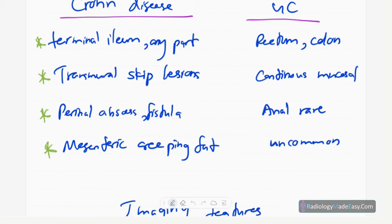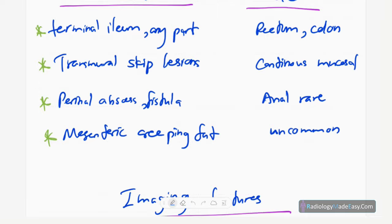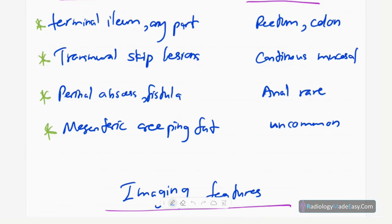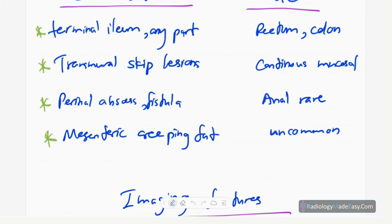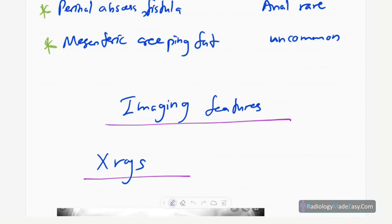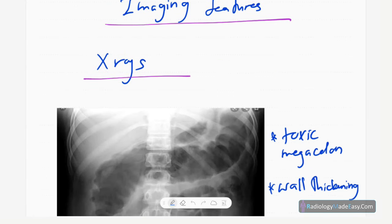Other complicating features in Crohn's disease include perianal fistula and perianal abscess formation, whereas in ulcerative colitis, anal involvement is uncommon. There's also mesenteric creeping fat in Crohn's disease, meaning extension of mesenteric fat around the bowel wall — this is not seen in ulcerative colitis. These are radiologically important features to differentiate the two conditions.